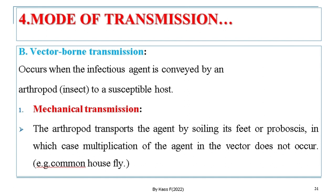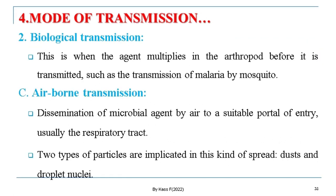Vector-borne transmission occurs when the infectious agent is conveyed by an arthropod to the host. A vector may be mechanical or biological. In mechanical transmission, the arthropod transports the agent by soiling its feet or body parts, but multiplication of the agent in the vector does not occur — for example, the common fly. In biological transmission, the agent multiplies in the arthropod or insect before it is transmitted — such as the transmission of malaria by mosquito.